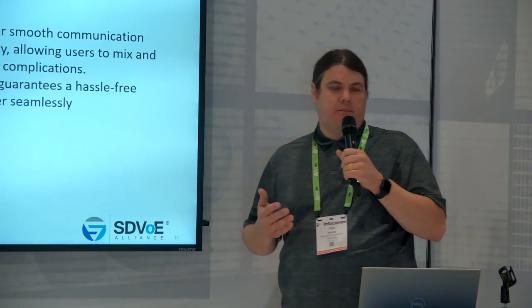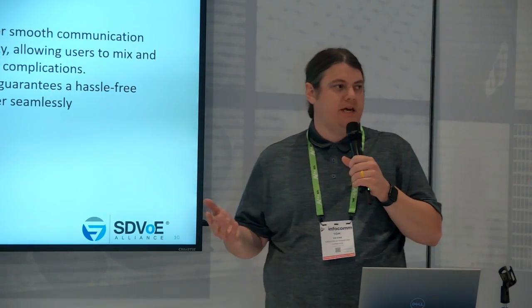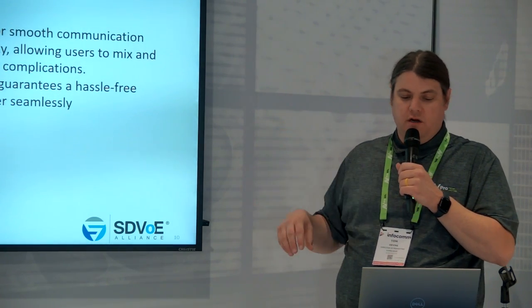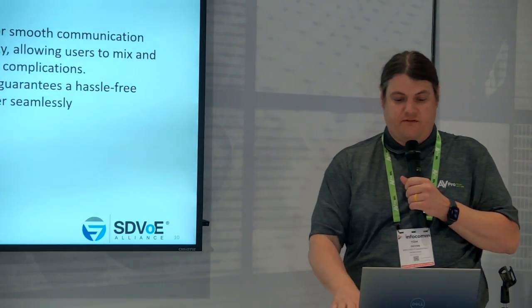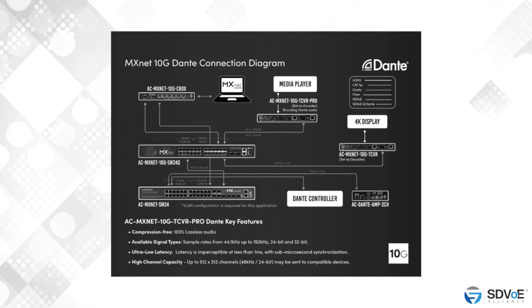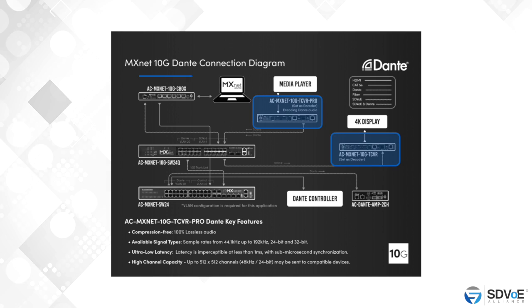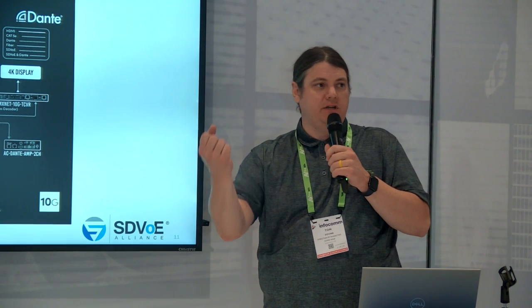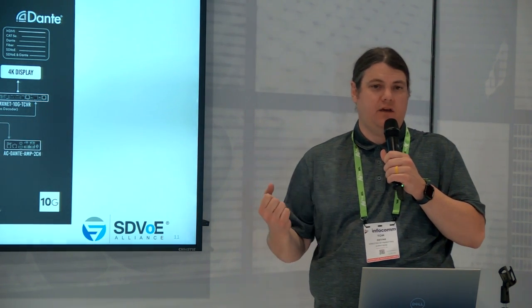When it comes to SDVoE, interoperability is really important. We're putting together systems with TVs, speakers, ethernet, and all sorts of different things that need to work together. With our 10G systems, not only do you have encoders, decoders, and control boxes, but we also have Dante audio running alongside the SDVoE video signal. So you have the best imaging possible over AV over IP with SDVoE, plus the standard networked audio that every integrator is looking for — and that's Dante.